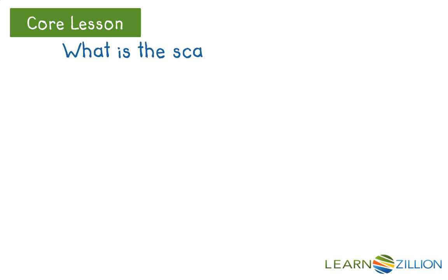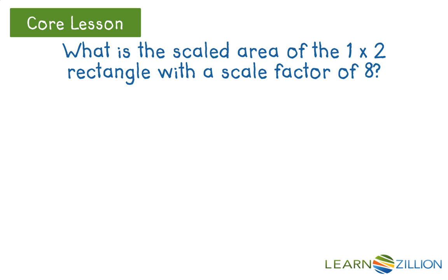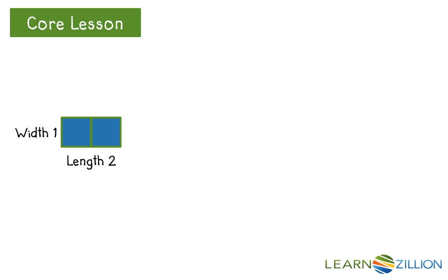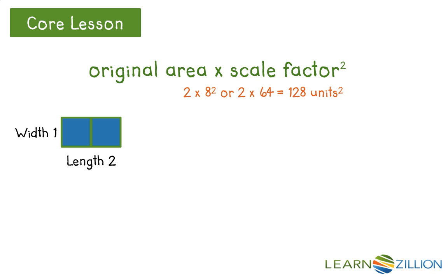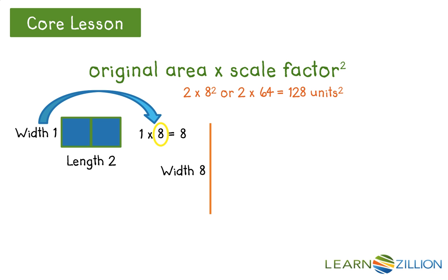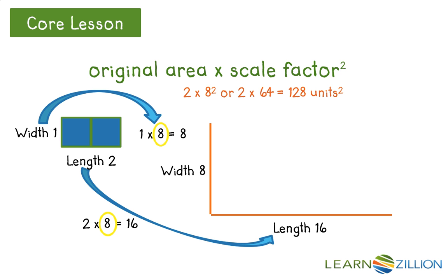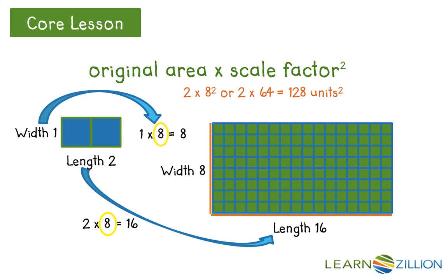What is the scaled area of the 1 by 2 rectangle with a scale factor of 8? We are going to try our new formula using the scale factor to generate the scaled area: multiply the original area times the scale factor squared. The original dimensions are 1 by 2, so 1 times 2 equals 2, times 8 squared, or 2 times 64 equals 128 square units. Now let's compare using the scaled dimensions: width is 1 times scale factor 8 equals 8, and length is 2 times scale factor 8 equals 16. 8 times 16 equals 128 square units, which equals the scaled area we found with our first method, and so we are correct.